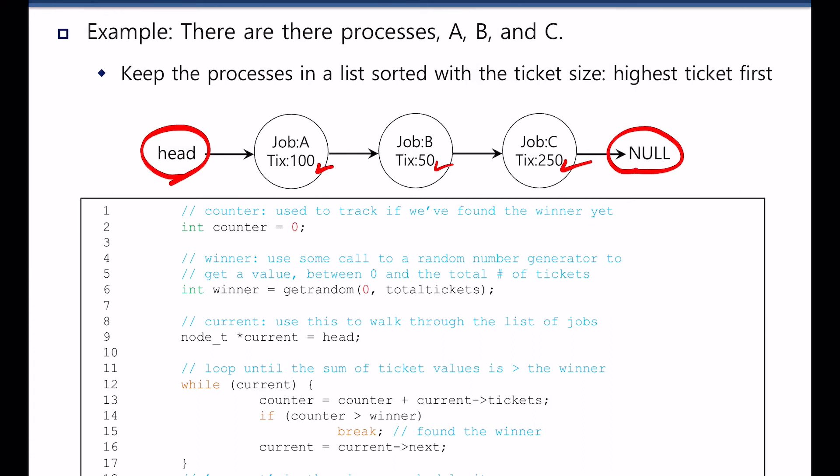Then, what will be the average number of processes it has to scan until it finds a winning lottery? Of course, it will be N over 2 if there are N processes in the linked list. If we order the list with the amount of tickets, then the CPU scheduler becomes more efficient because it is likely that the CPU scheduler scans less number of processes until it finds a winning ticket.